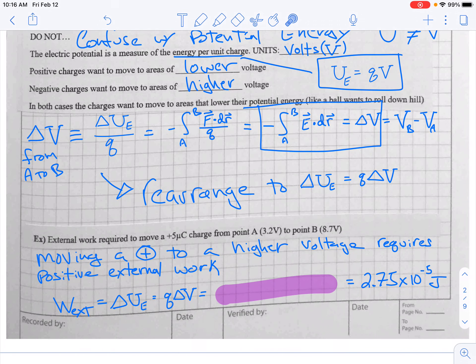If you're going to move a positive charge to a higher voltage, we're going from 3.2 volts up to 8.7 volts, that's going to require positive external work. The work required is going to be equal to the change in potential energy. So plug in the numbers, make sure you get that result.